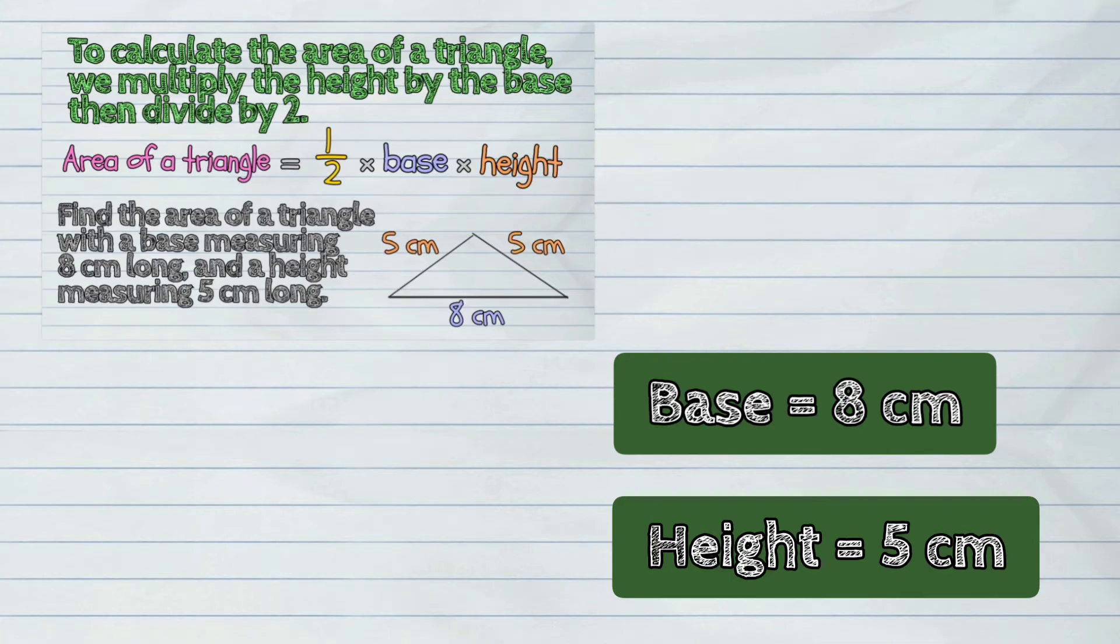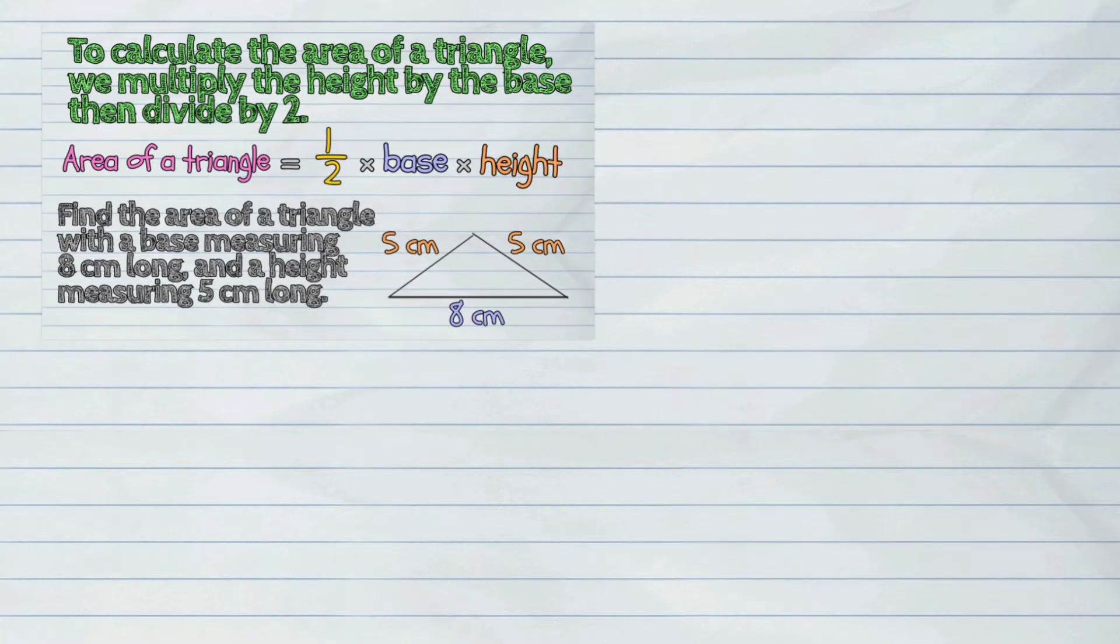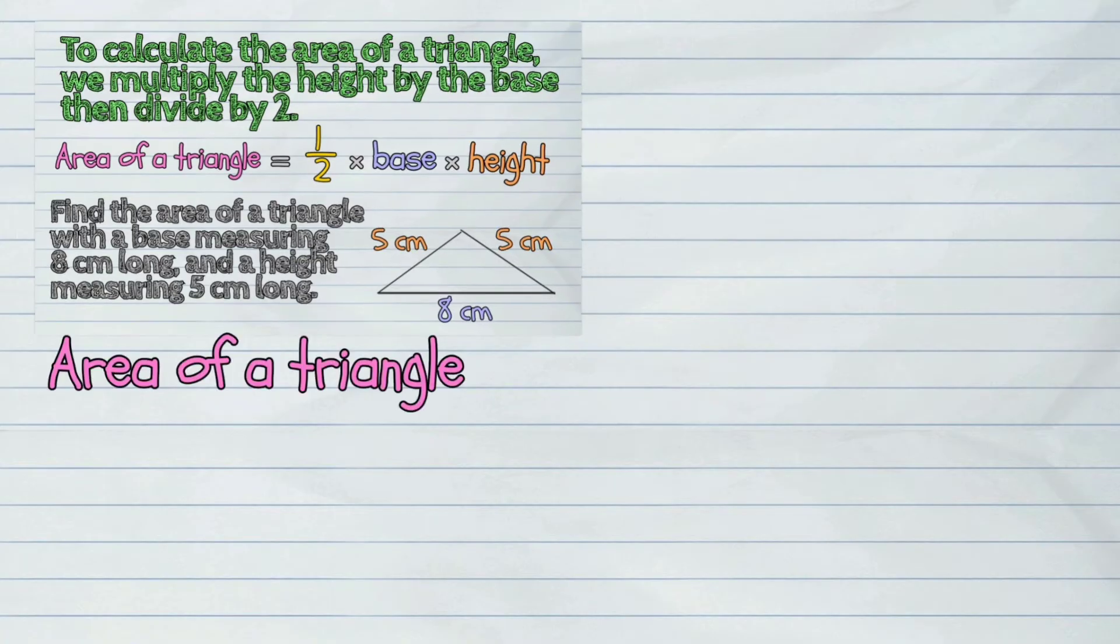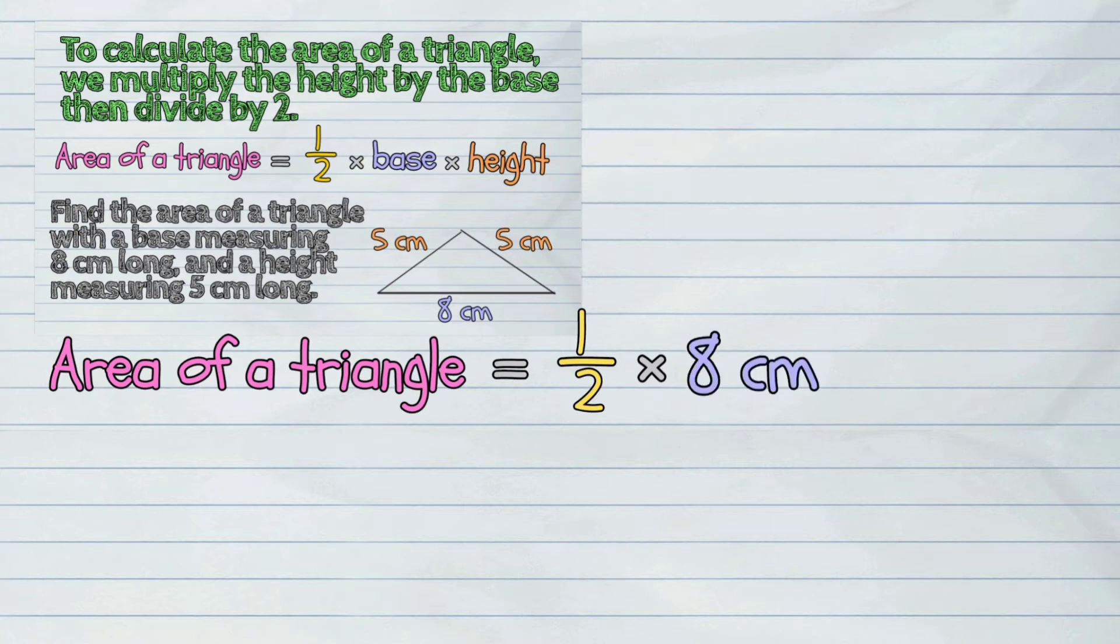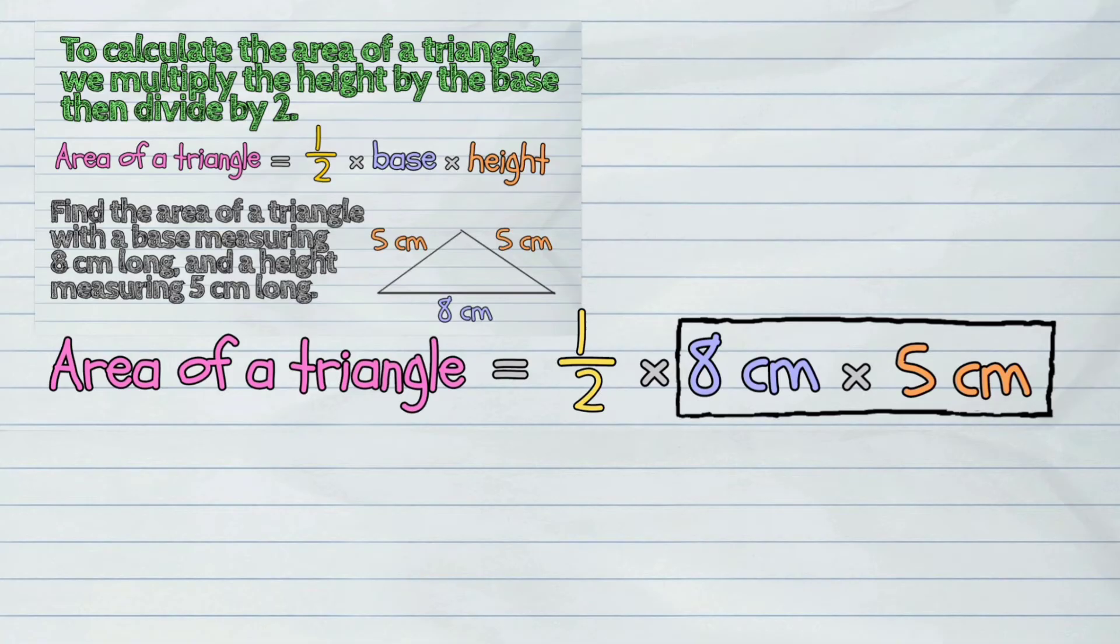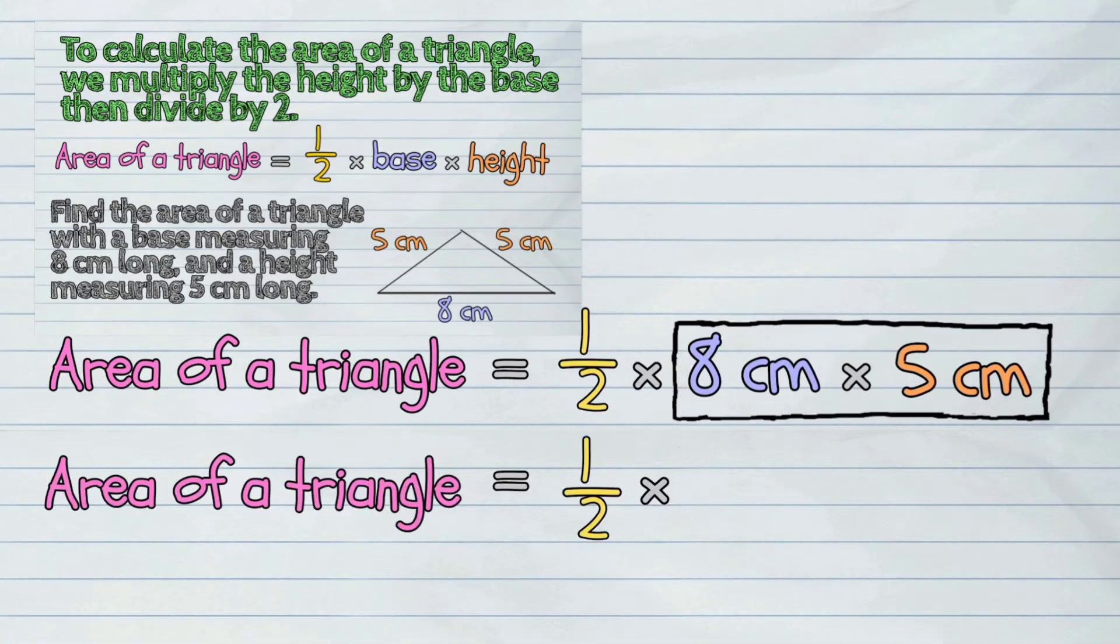Now, let's put them into the formula. Area of a triangle equals one-half times eight centimeters times five centimeters. We will first multiply eight and five. This gives the answer of forty!